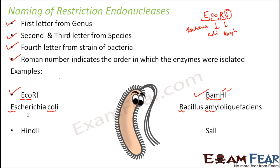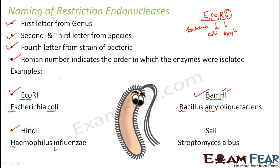HindII comes from Haemophilus influenzae — H and IN come from Haemophilus influenzae, D is the strain, and 2 represents the second enzyme extracted from that bacteria. Then Sal1: S is for Streptomyces, AL is for albus, and 1 means it was the first enzyme extracted from Streptomyces albus. Each restriction endonuclease has a specific recognition sequence and cuts DNA at a specific site.